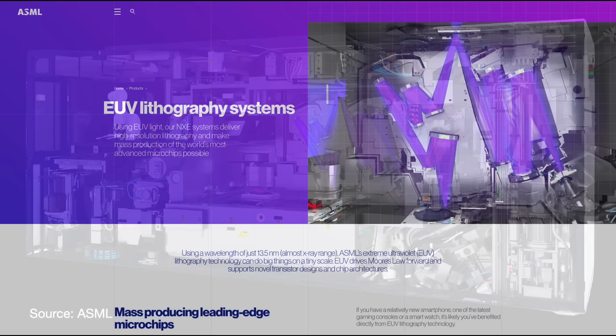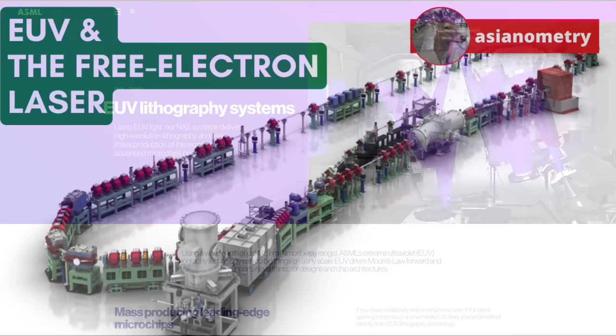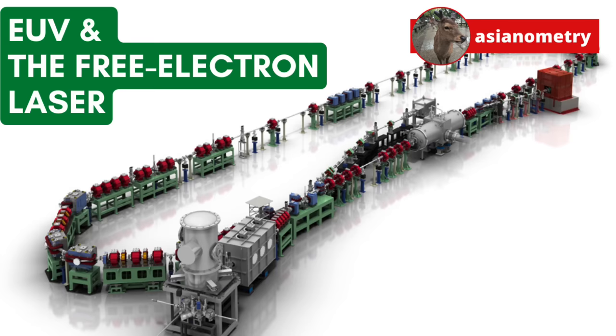EUV was supposed to take us to the promised land. It hasn't yet, because the amazing, double-tin shot with a laser EUV light source everyone loves to talk about is not powerful enough. And that is why scientists are tinkering with something else. And that something might cost half a billion dollars. In this video, we are going to look at the experimental idea of free electron lasers for EUV lithography.